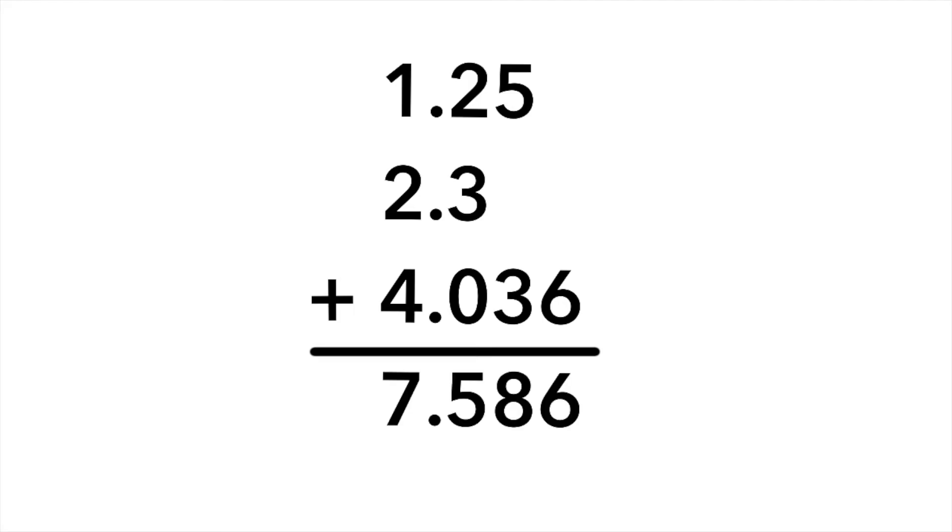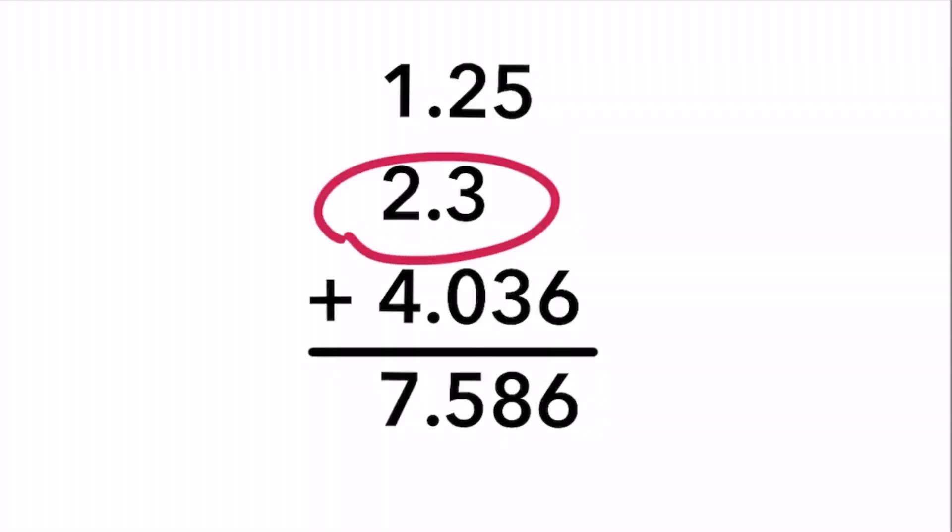For example, if we add 1.25 plus 2.3 plus 4.036, the unrounded answer is 7.586. 2.3 is the least precise measurement as it only has one number after the decimal. So our answer must also have only one number after the decimal. To round our answer, we look at the 8 to round the 5. The 8 rounds the 5 up to a 6, and our final answer is 7.6.